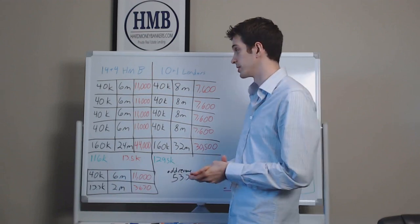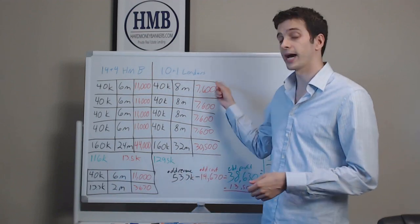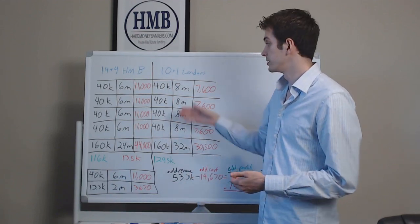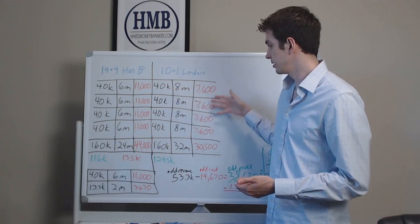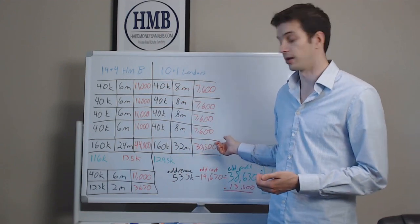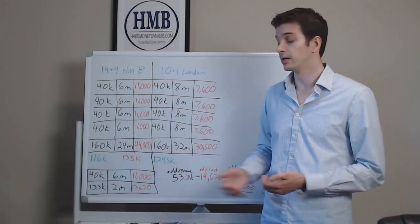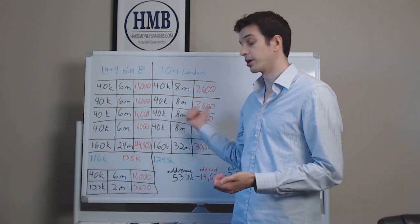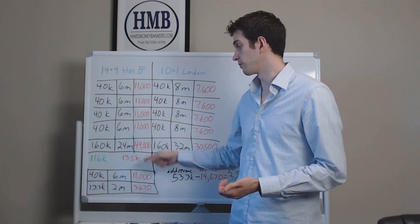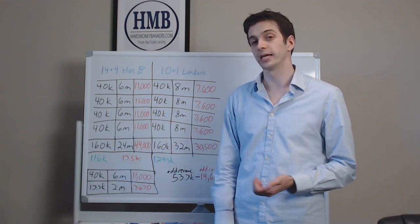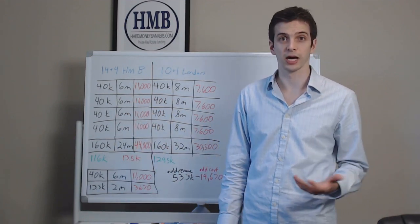That's pretty good to put into your pocket there. Now, if he had a 10 in 1 lender, same projects, it would have only cost him $30,000. He would have made about $130,000 instead this time. So it seems like a no brainer to go with the 10 in 1 guys versus the 14 in 4 because it's saving you $14,000 essentially.